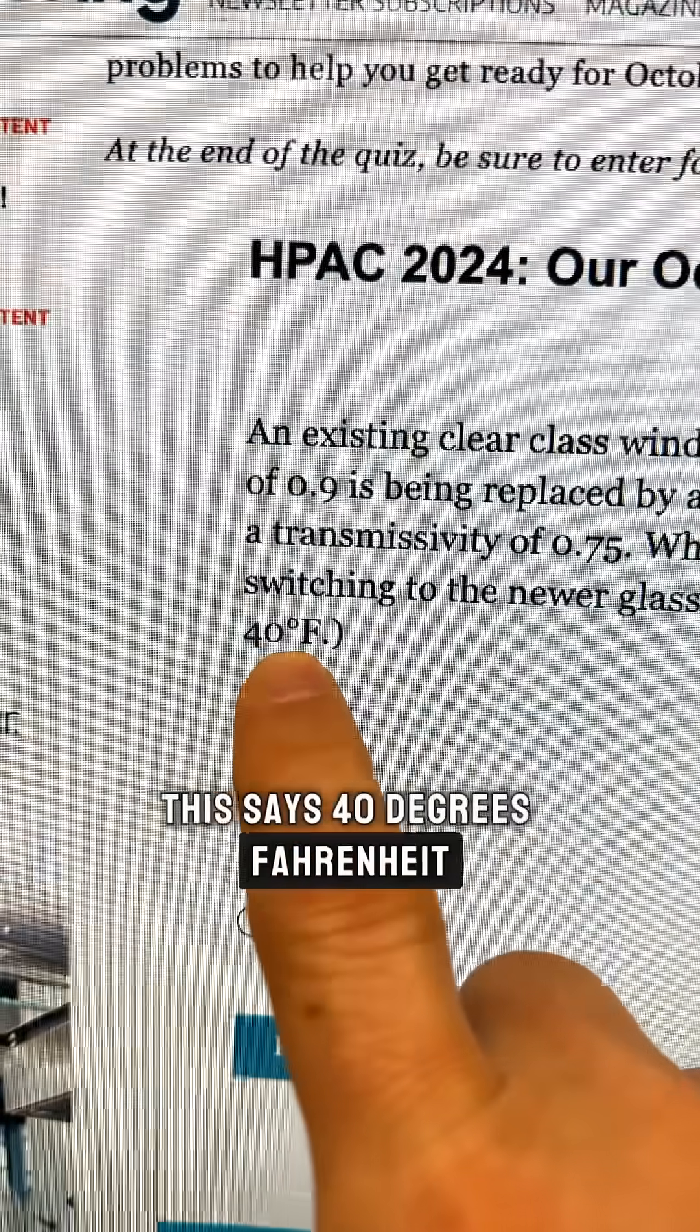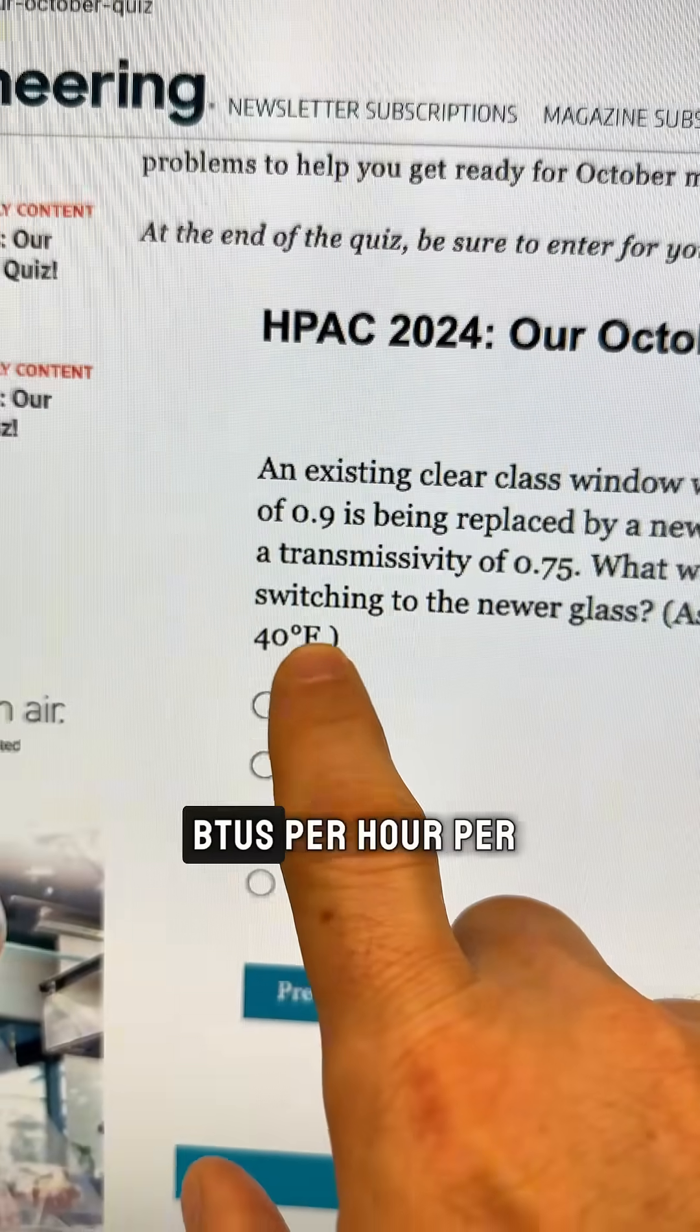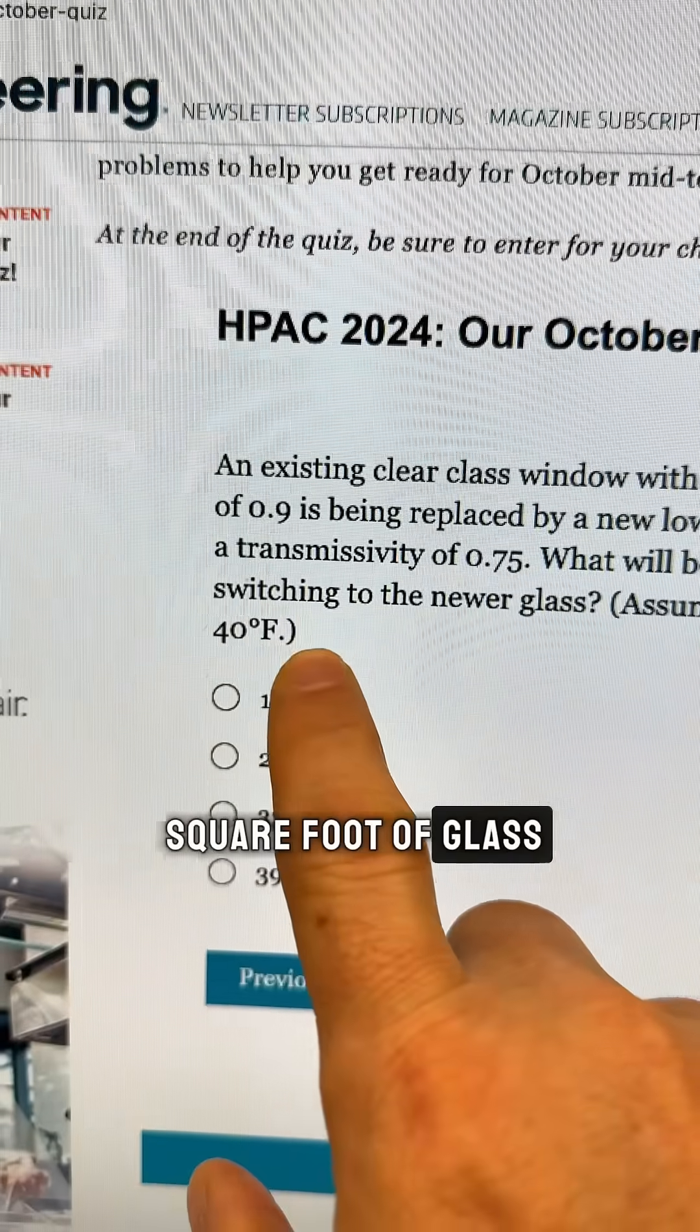This says 40 degrees Fahrenheit. That should be 40 BTUs per hour per square foot of glass.